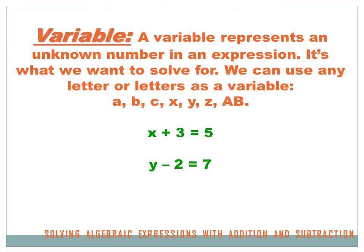Algebra is based on a concept called a variable. A variable is a symbol that represents an unknown number in an expression — it's what you want to solve for. We can use any letter or letters as a variable, for instance A, B, C, X, Y, Z, or AB. The variable is inserted into the expression as an unknown number. For instance, X: we don't know what X means, but we do know that X plus 3 equals 5, or we don't know what Y means but Y minus 2 equals 7.